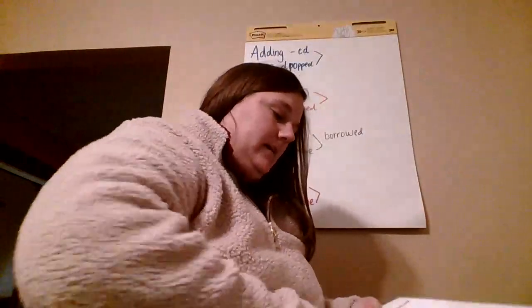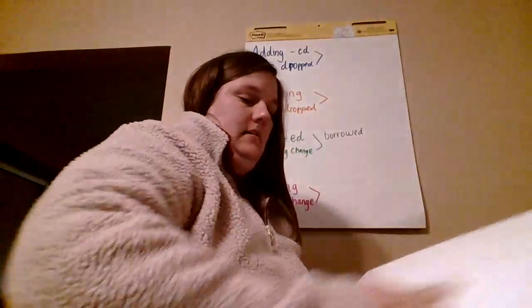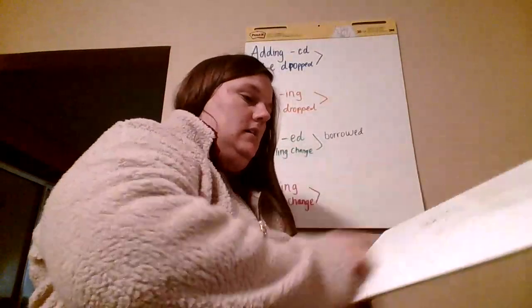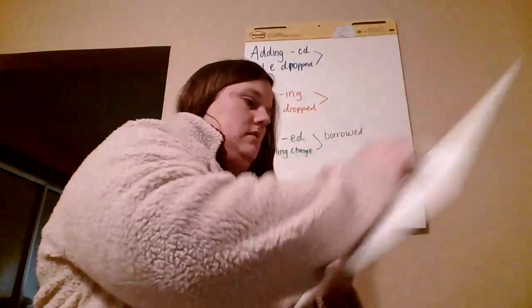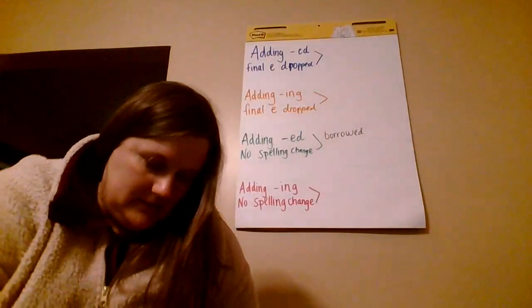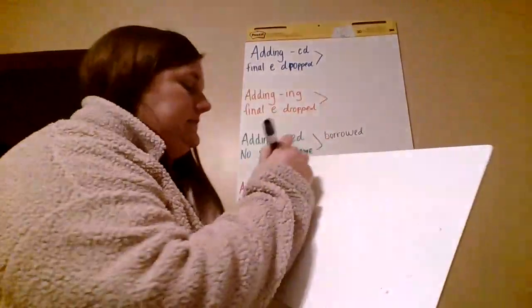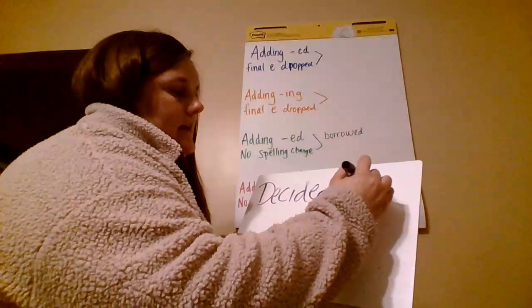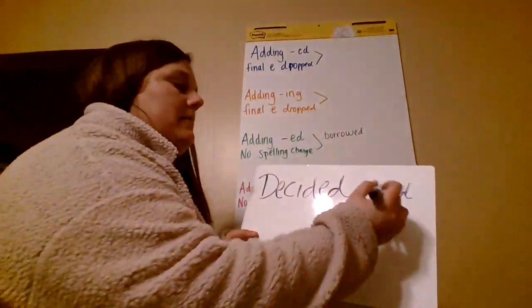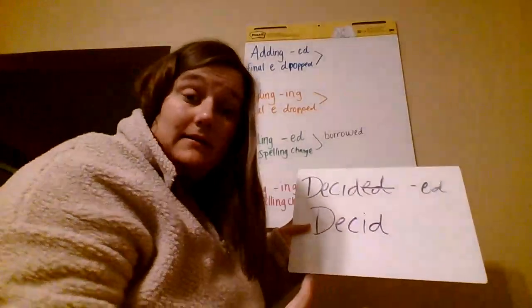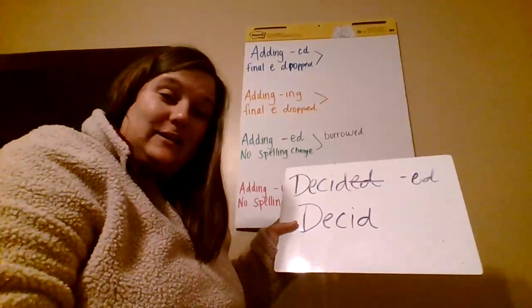Now let's move on to another word. Let's go with decided. So on decided, you're going to take that ED off — it's kind of like our math problem. Take the ED off and you have D-E-C-I-D. Is that how you spell decide? You have to decide if that's how you spell decide. It's not.